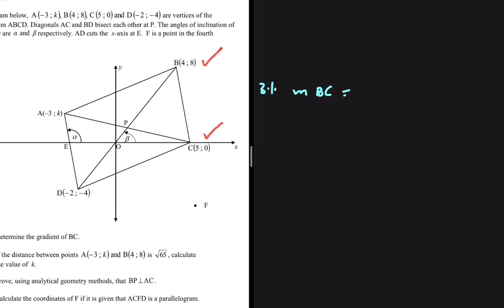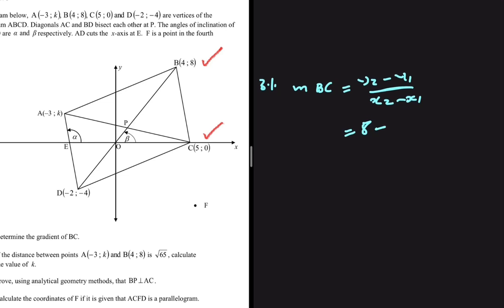The gradient of BC equals y2 minus y1 divided by x2 minus x1. Taking B as our second point, y2 is 8, y1 is 0, x2 is 4, x1 is 5. So we have 8 divided by minus 1, which equals minus 8. That is the gradient of BC.